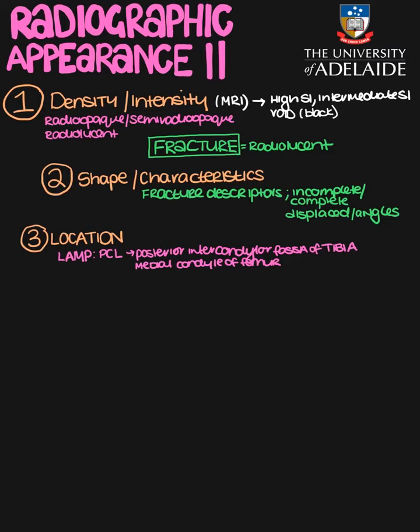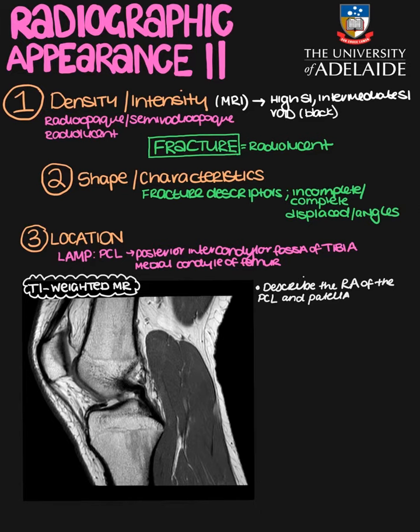I'm now going to pull up a couple of CT and MRI scans to practice describing the radiographic appearance of normal anatomy structures as well as some fractures. I've brought up a T1 weighted MRI of the knee. If I ask you to describe the radiographic appearance of the posterior cruciate ligament and the patella, I'll work through what I would expect as a master answer.